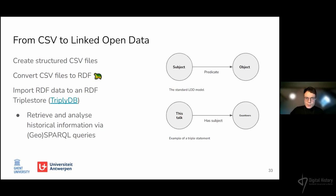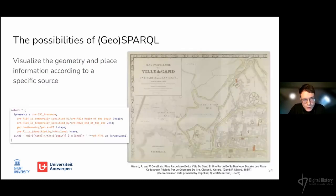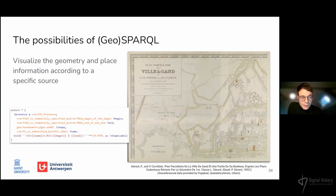For those not familiar with the term, a triple store is a database built specifically for the storage and retrieval of triples. Triples are statements with a subject-predicate-object structure — for example, an example triple could be that my presentation has the subject 'gazetteers.' Once the data is converted to RDF Turtle, which is a syntax for storing triples, the data is uploaded to TripleDB, which is an RDF triple store supporting GeoSPARQL. TripleDB supports GeoSPARQL — a query language used for querying geographic data stored as triples. Retrieval of historical data from the gazetteer can be done by writing SPARQL queries. In the example query, I asked to visualize the geometry and place information from a specific source — in this case, information from the previously mentioned parcel map of 1855.